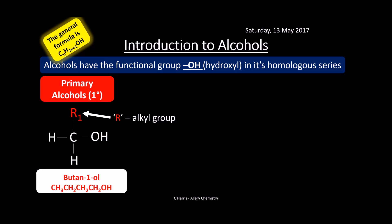In a primary alcohol you have your R alkyl group (R1), and the alcohol is attached to a carbon which is attached to only one other carbon — making it a primary alcohol. An example would be butane-1-ol.